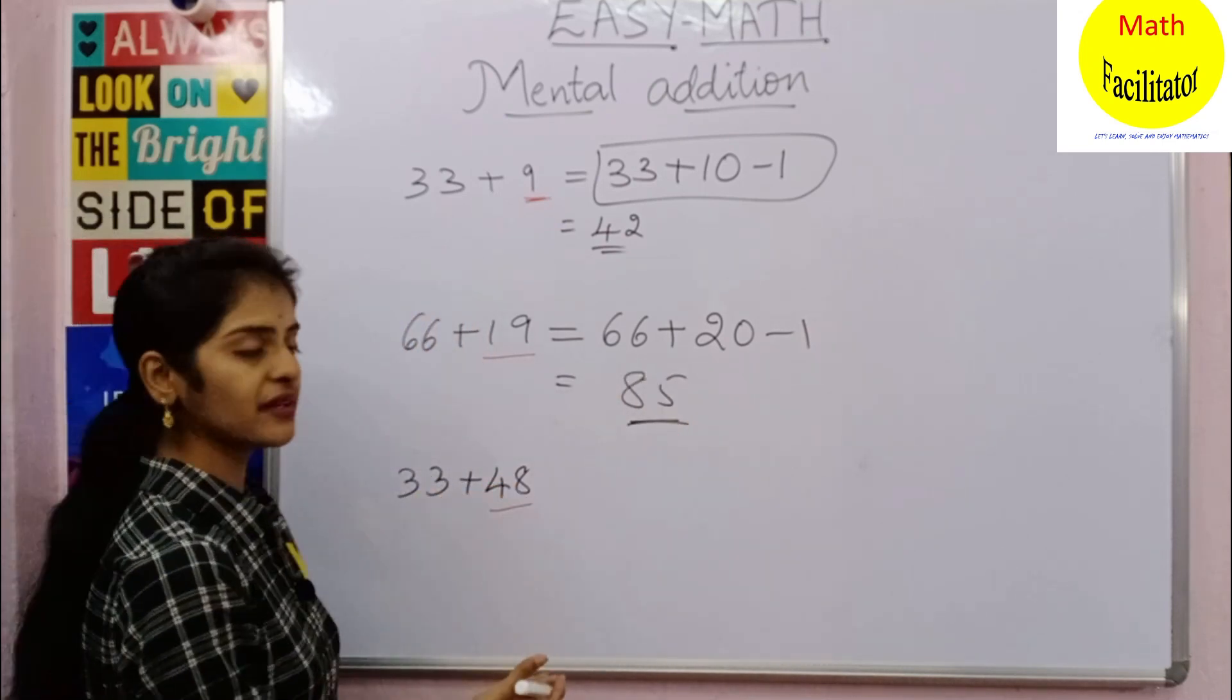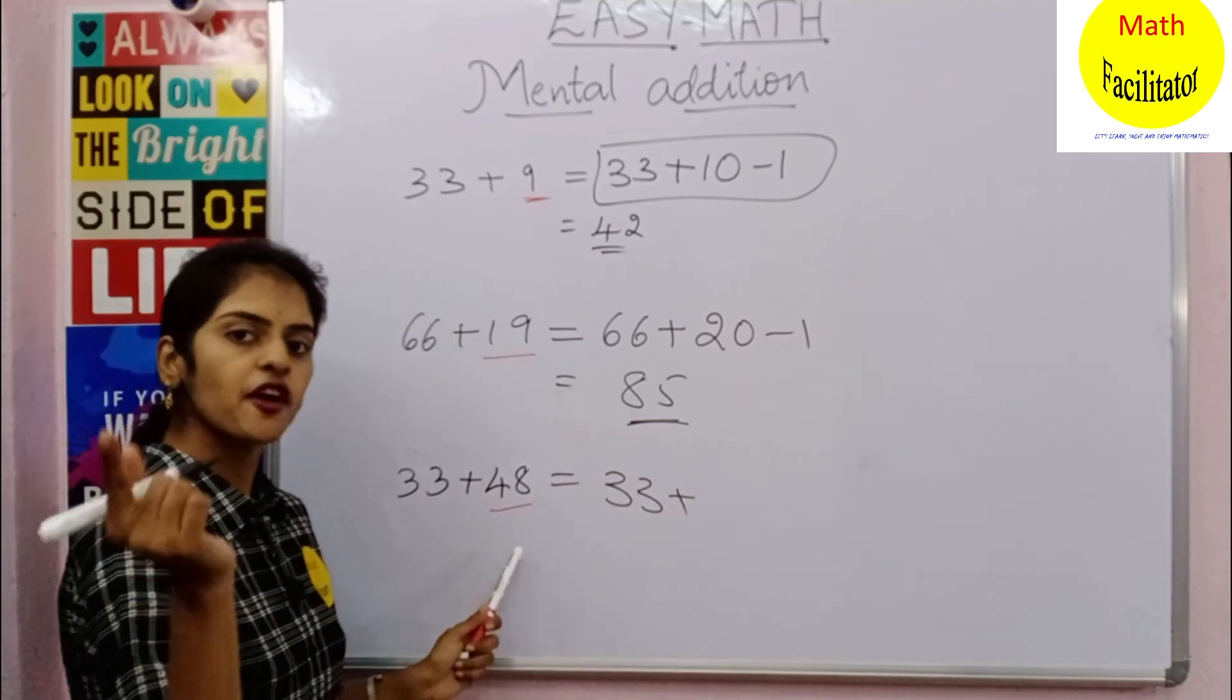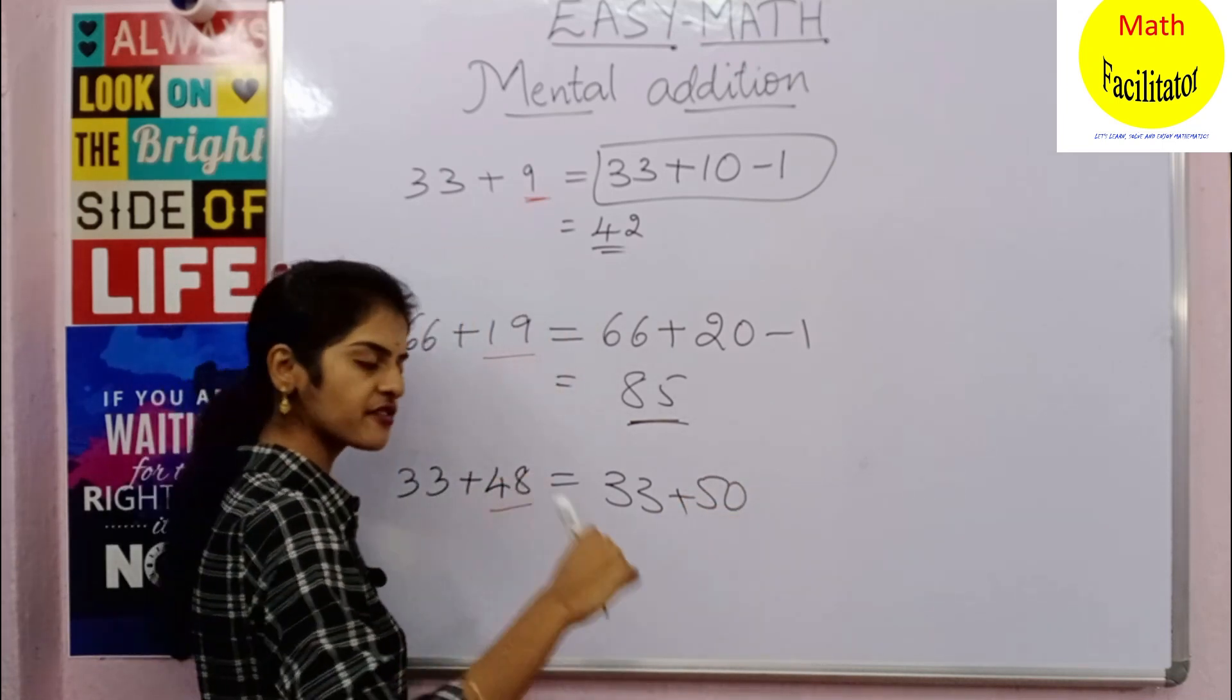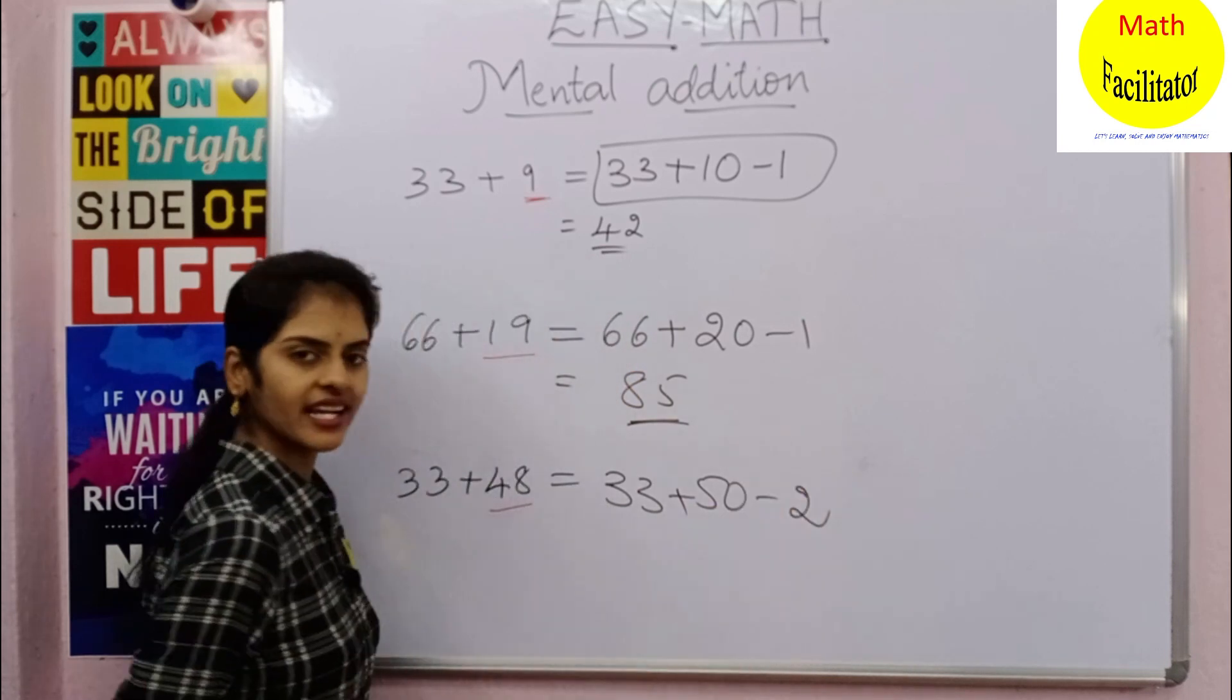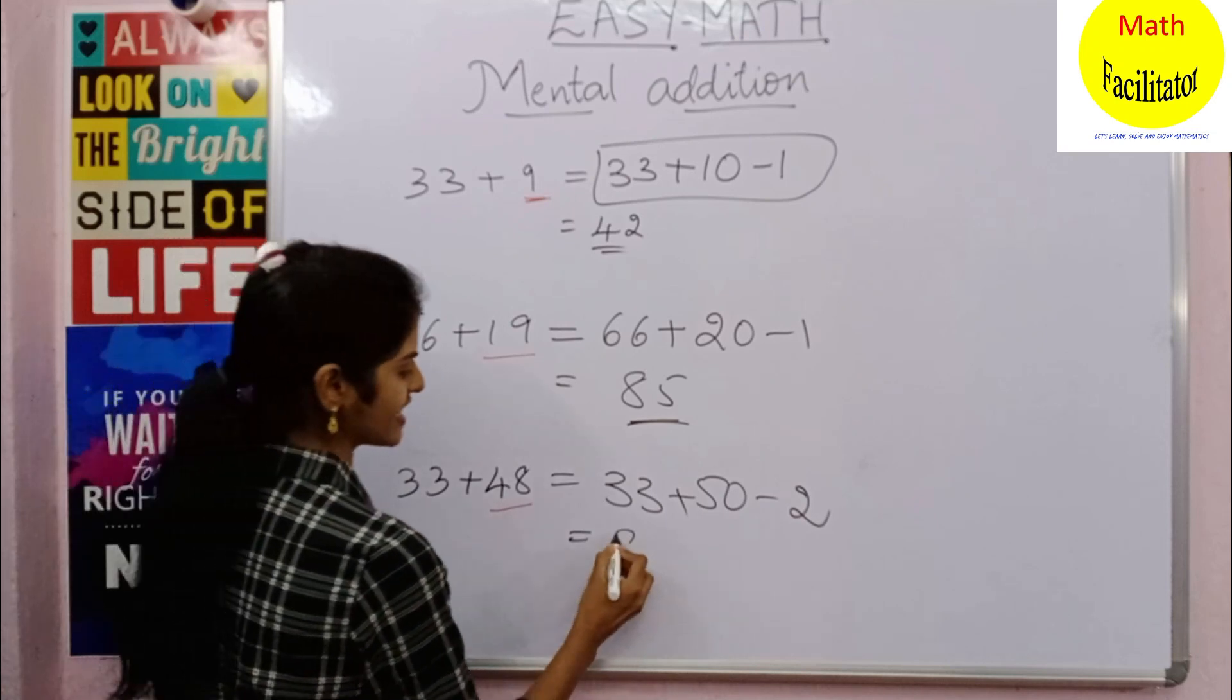Now 33 plus 48. So 33 plus 48 you can write as 50 minus 2. It is closer to 50 so I'm writing it as 50 minus 2. Now 33 plus 50 is 83, and 83 minus 2 is 81. Isn't it so simple?